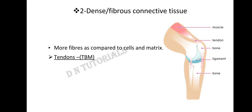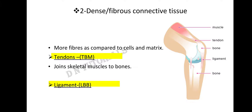Dense connective tissues are of two types: tendons and ligaments. To remember, use TBM and LBB. TBM means tendon connects bones to muscles, and LBB means ligament connects bones to bones.